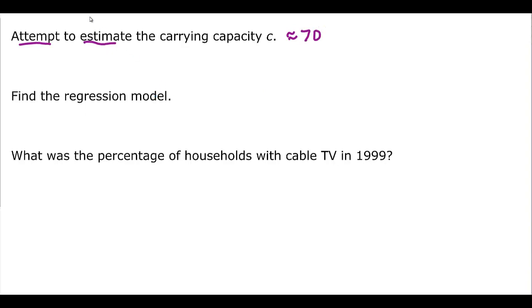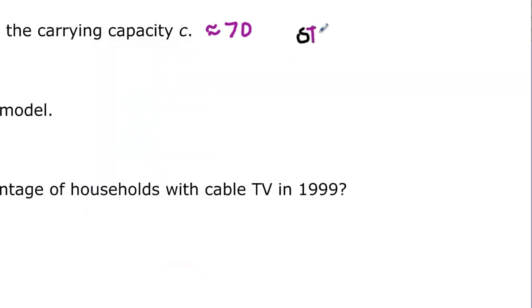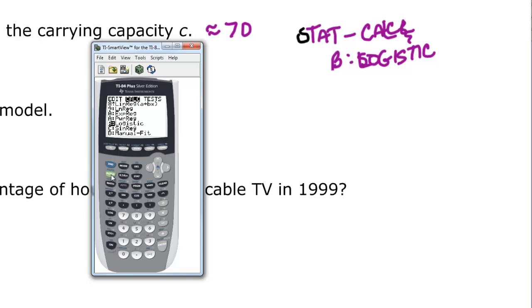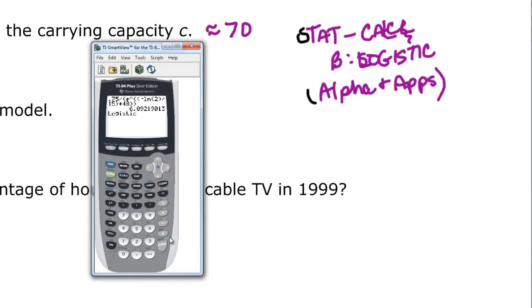It says find the regression model. Here's what we really need. I've got all this data in here. We go back to stat, over to calculate. If you arrow down way past here, we're going to get to B. B says logistic. We're going to do stat over to calculate. And then we want to choose B which says logistic. You can also find that by alpha and then the B is above your apps. And it would take you right to logistic. I'm logistic. And then I just press enter because that's the one I want. This one takes a little while I've noticed. But you can see this little thing going here. So it's thinking. And now we have it.